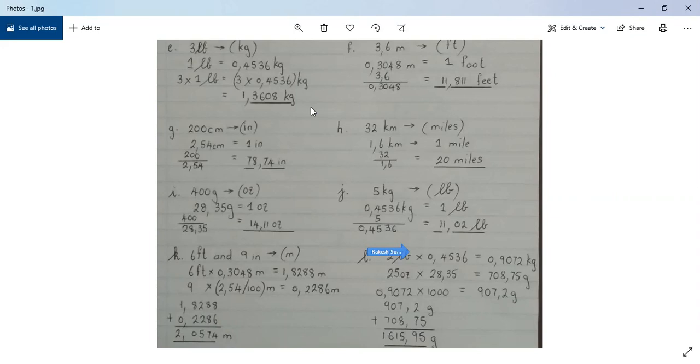Three pounds converted to kilograms. What we have is 1 pound equals 0.4536 kilograms. So to conclude, 3 pounds is equal to 1.3608 kilograms.